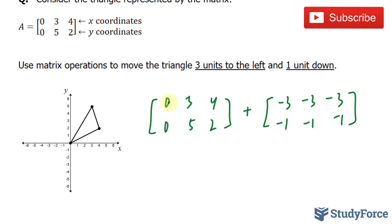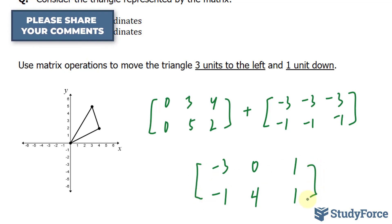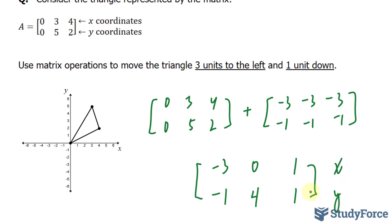0 plus negative 3 is negative 3. 3 plus negative 3 is 0. 4 minus 3 is positive 1, negative 1, positive 4, and positive 1. So this is our resultant matrix. And since this row corresponds to all the x-coordinates and all the y-coordinates for the second row, we can go ahead and plot these points.